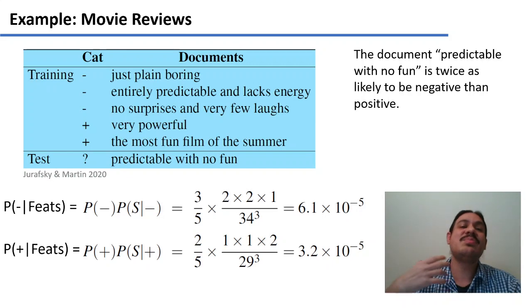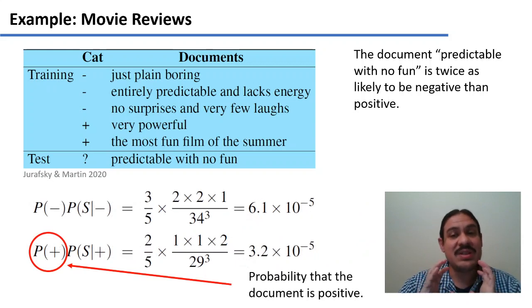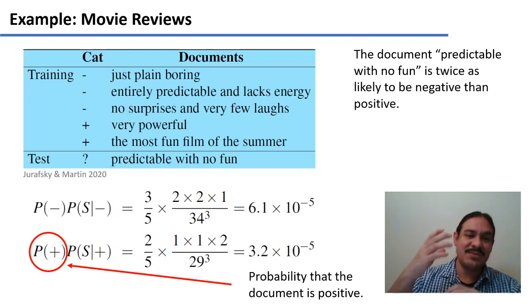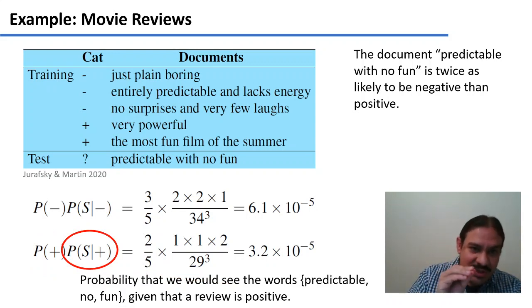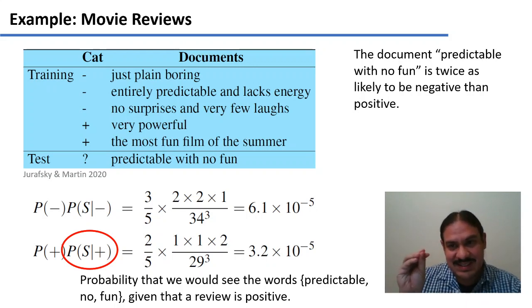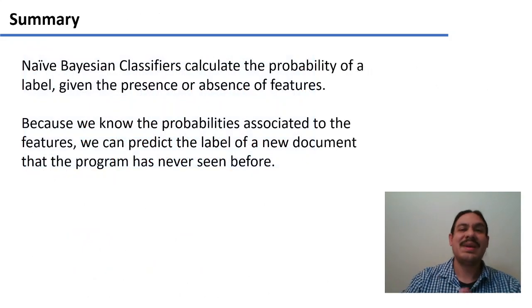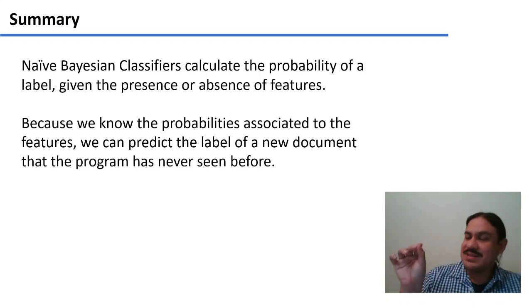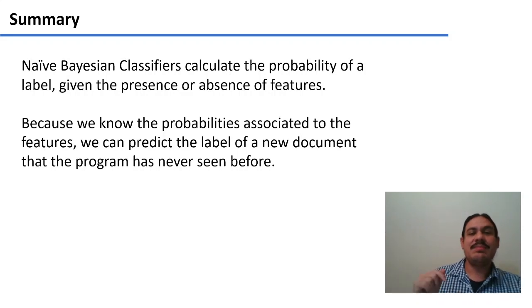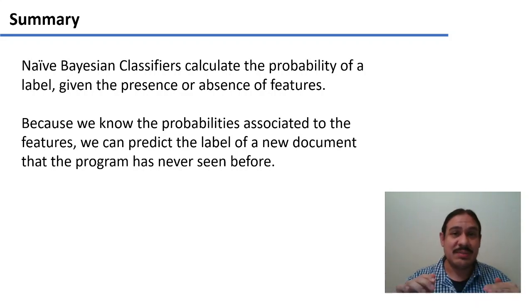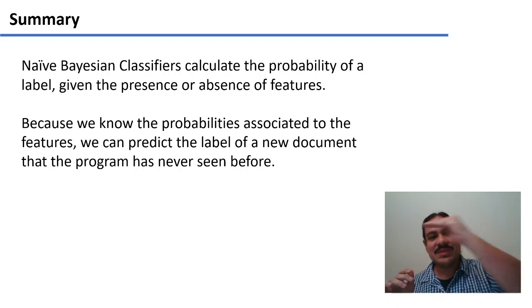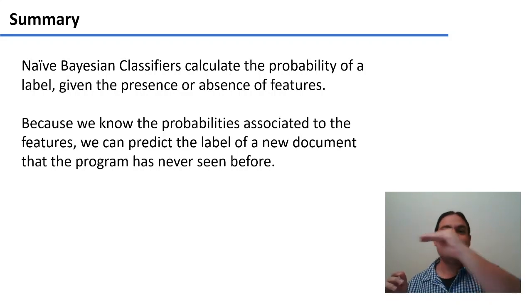For clarity, the first element in the multiplication is the probability that a document is positive or negative — one category versus another. And the second element is the probability that we would see those features or those words given that a review is positive in the training set. This is the math behind it. A naive Bayes classifier calculates the probability of a label given the presence, absence, or count of features. And because we know those probabilities from the training set, we can use them to predict the label of a new document we have not seen before. In doing that, the system can see new examples and give them a classificatory label — it becomes a classifier.